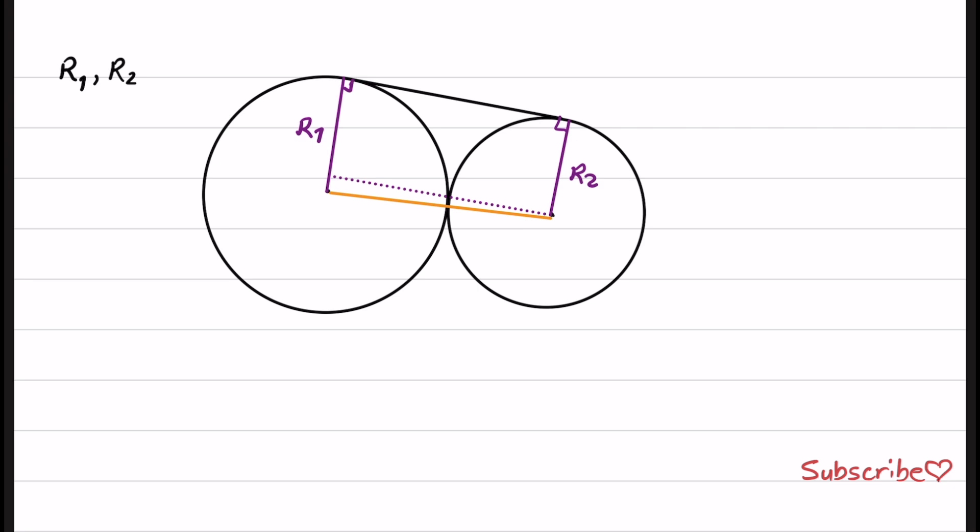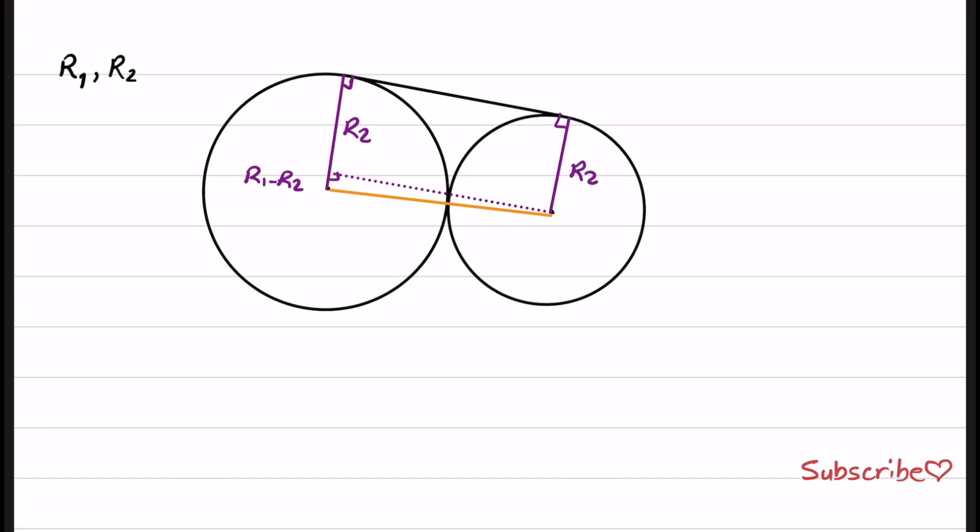Therefore, this shape that I plotted here is a rectangle. If that is a rectangle, I know that this section is r2 and I can write it down. This side is r2 and this one is r1. So the remainder is r1 minus r2. And we have right angles here, here, and here.